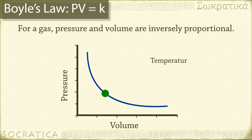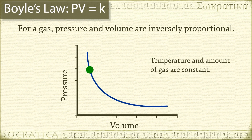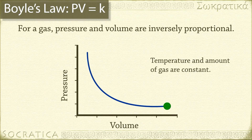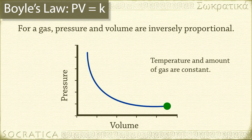The relationship between pressure and volume is Boyle's law: PV equals a constant. So as pressure goes up, volume goes down; as volume goes up, pressure goes down. That's an inverse relationship. Keep in mind this only holds if temperature and the number of particles of gas stays constant.